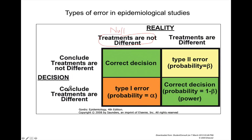The lower right cell represents a true positive, where treatments are truly different and we conclude they are different. This cell also represents what is known as the power of a study, which we will discuss later. The type 1 error is the situation in which treatments are really not different, but our study leads us to believe that they are — we conclude that treatments are different when they are not.